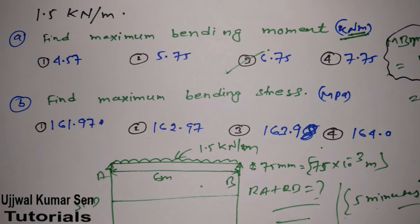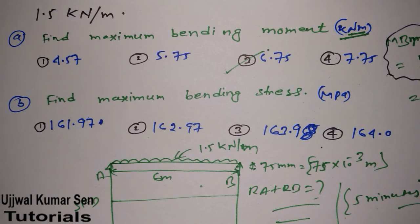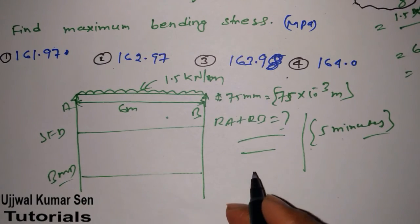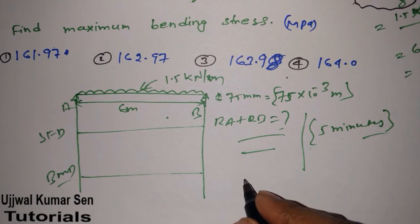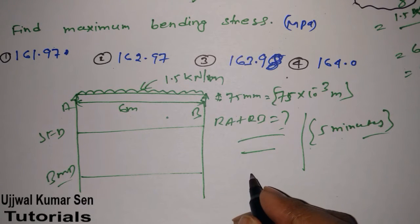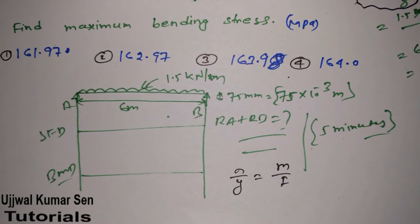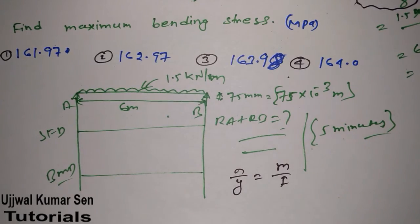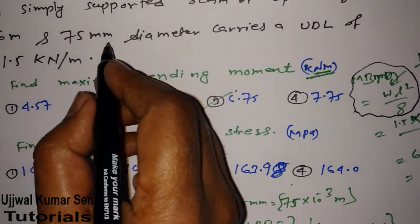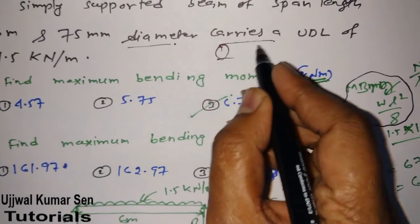Now let's move to the next problem: find the maximum bending stress. For finding maximum bending stress we use the bending equation, which plays the most important role. That equation is σ/y = M/I. We don't require the full equation, just this part.